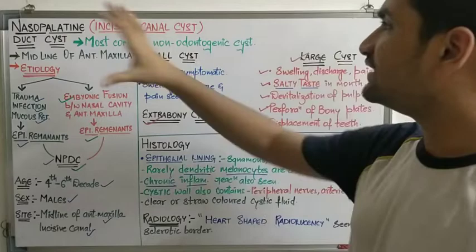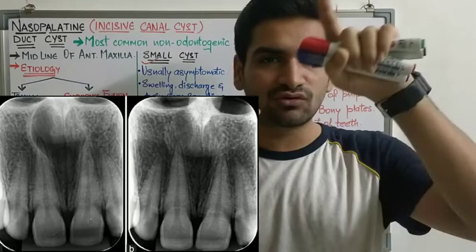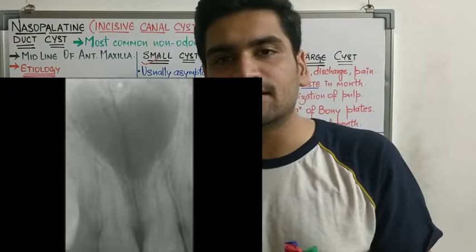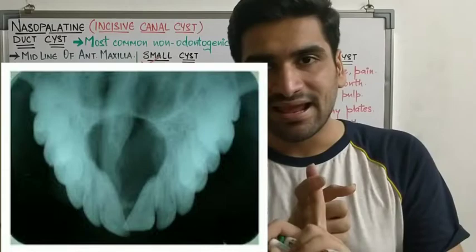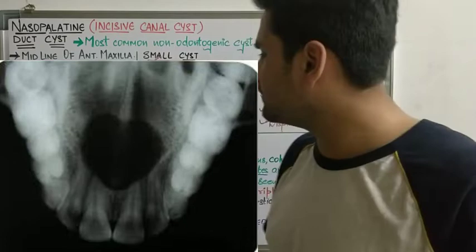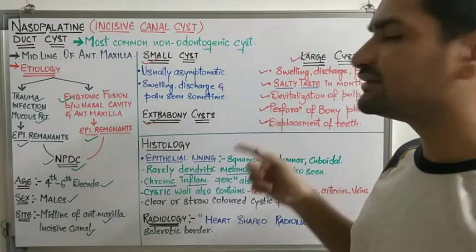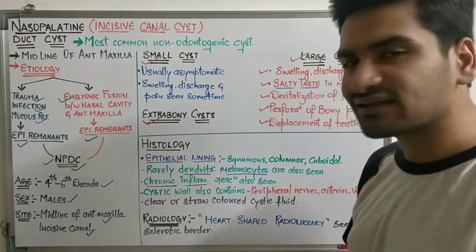For radiology, if you take a radiograph of the anterior maxilla of a nasopalatine duct cyst patient, you will see a well-defined radiolucency in the anterior maxilla between or associated with both the maxillary central incisors. You may also see perforation of the labial or palatal bony plates, displacement of teeth, and root resorption on the radiograph.